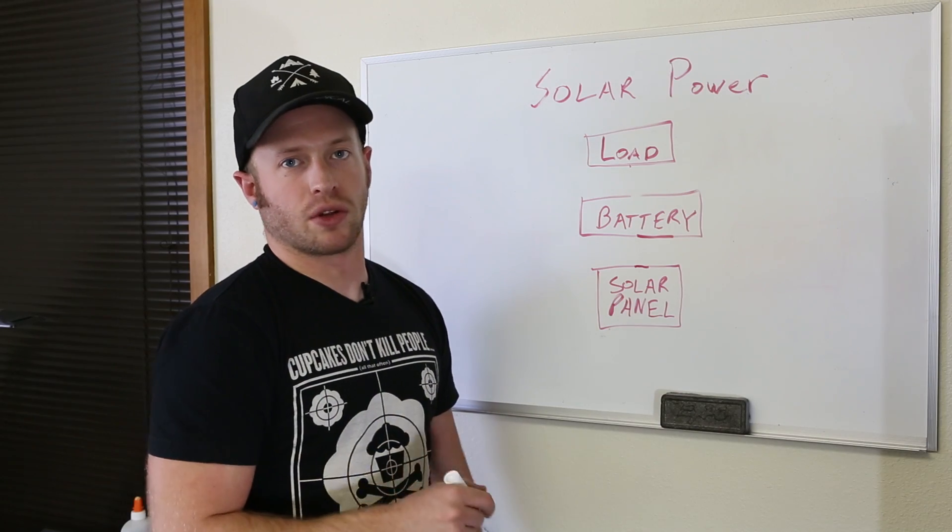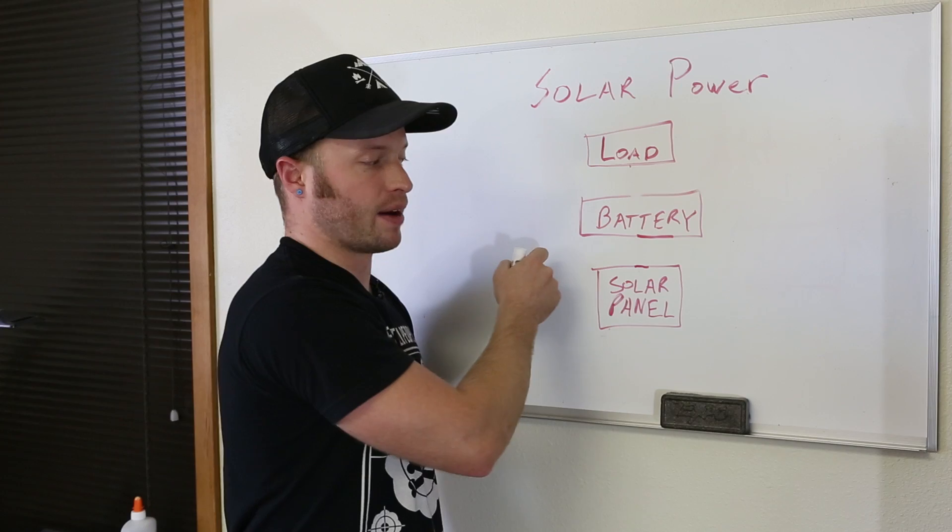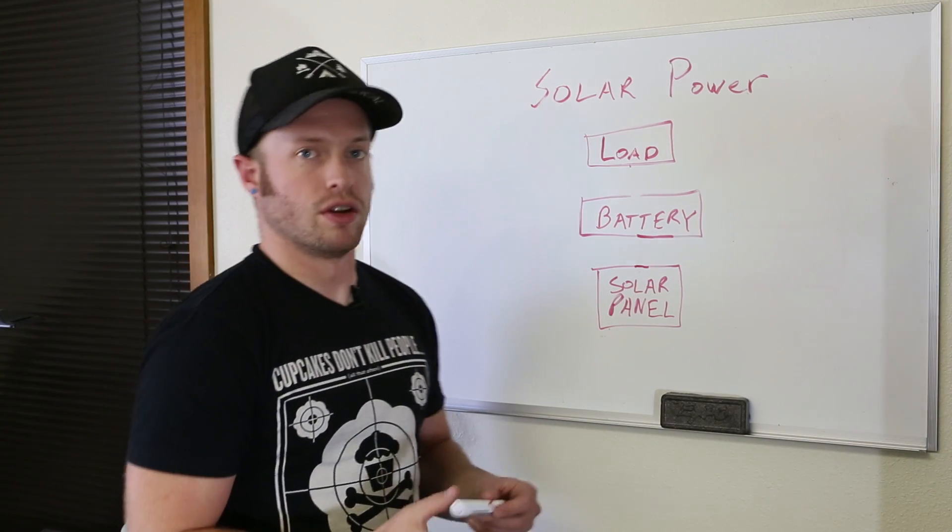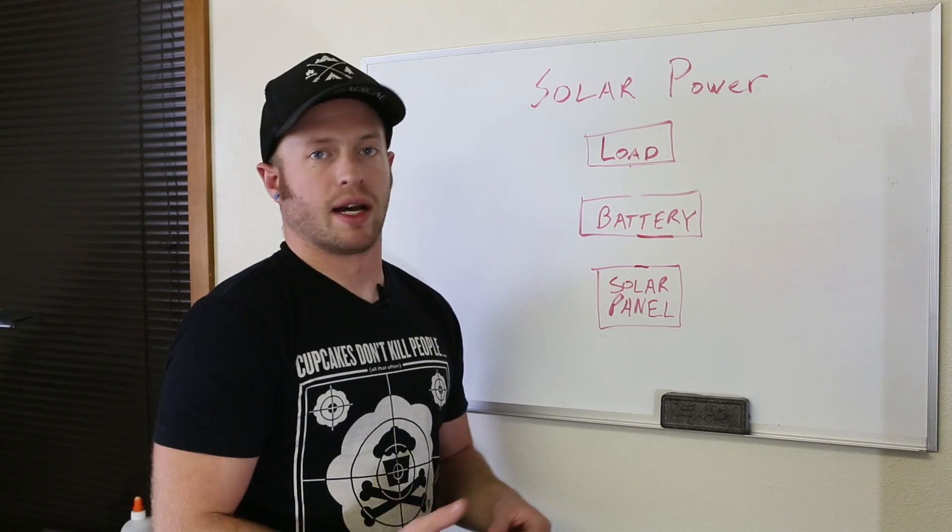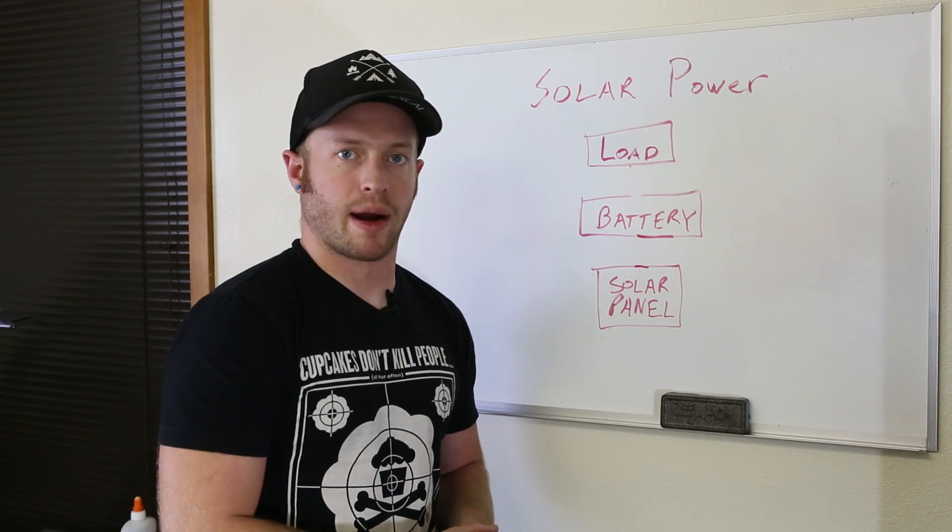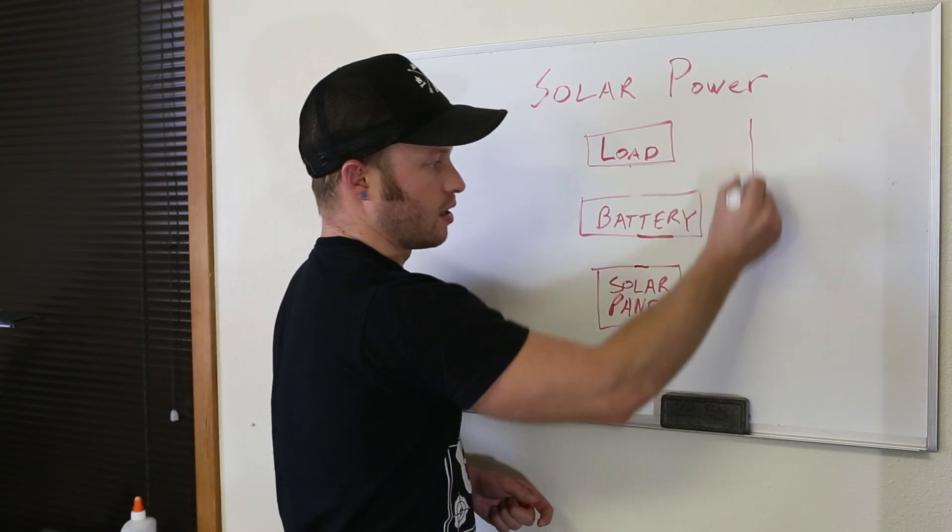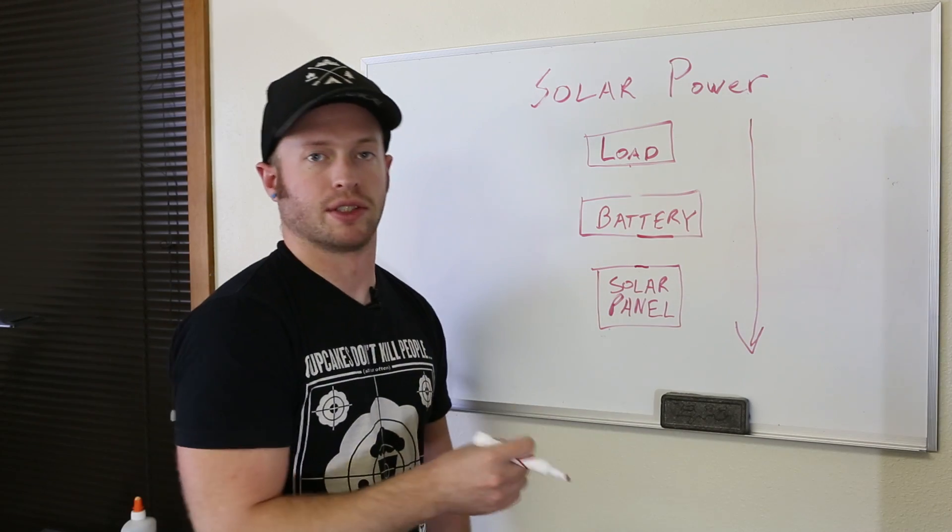When you're designing a solar power system you have three main components: your load, your battery, and your solar panel. Usually you start with a known load. So in my case the load is the LEDs. I bought the LEDs, hooked them up to a power supply, and saw what the max current draw was going to be. From that information I could design down through the rest of my solar power system.